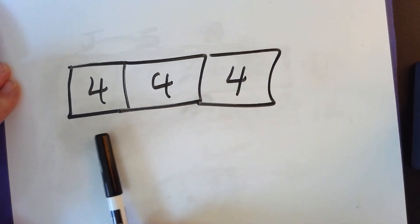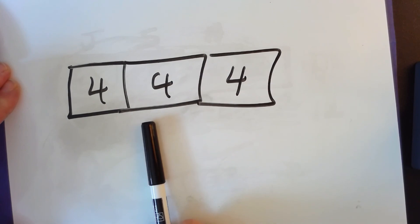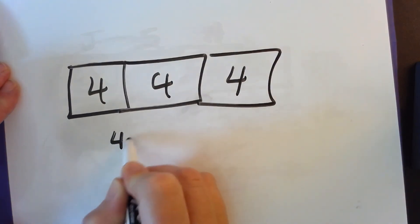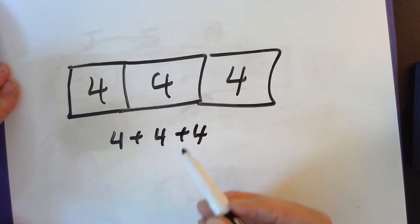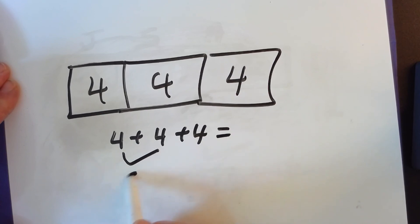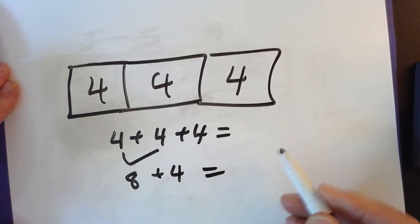Yep. There are only three boxes, because there are three groups. We can write four in each box. The repeated addition is four plus four plus four. So we can skip count. Or we can add the double. Four plus four, four plus four is eight plus four more equals twelve.